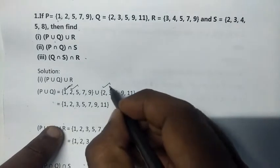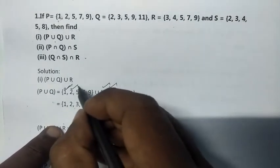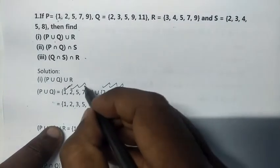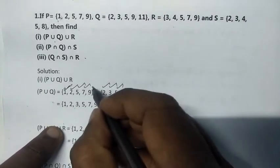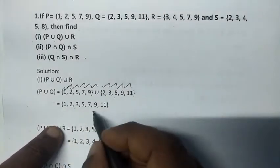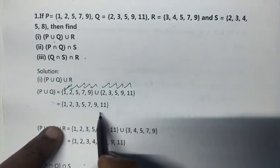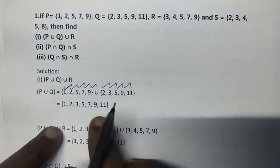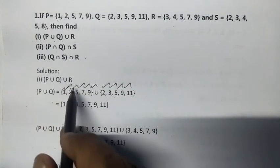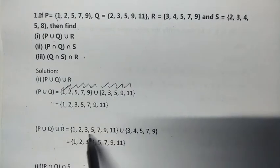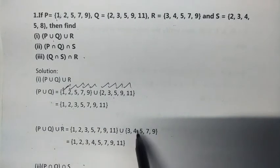Three is there. Five is there. Seven is there. Nine is there. Then 11 is there. Now union R. So P union Q union R: we have 1, 2, 3, 5, 7, 9, 11.